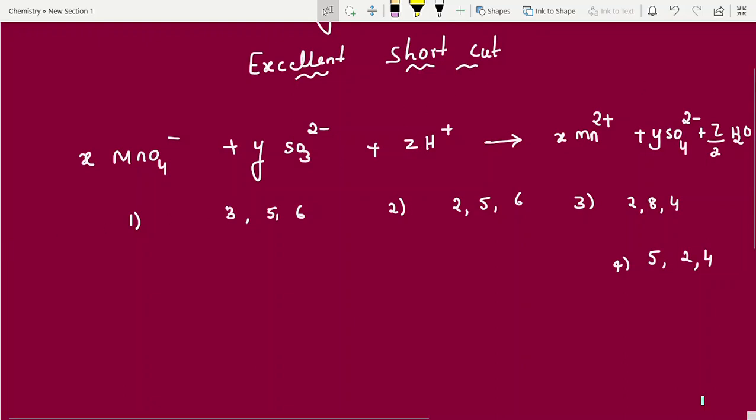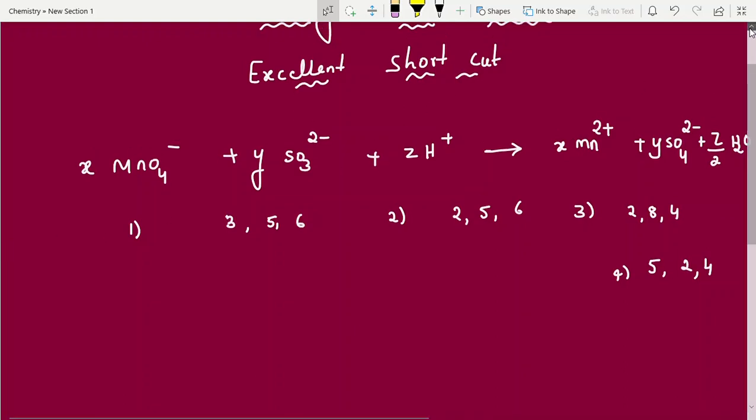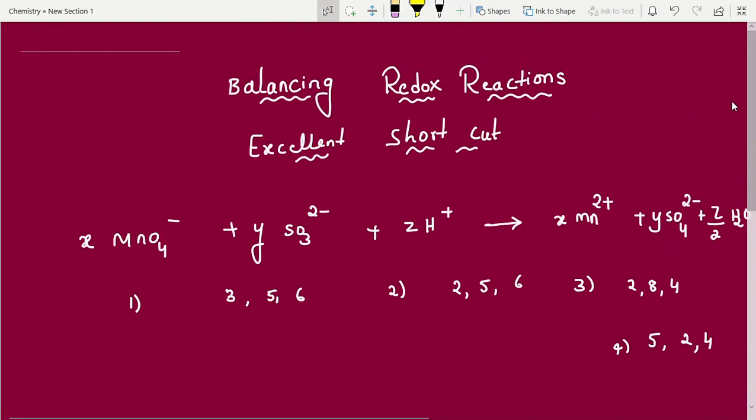We have different methods, concept explanation types. We are discussing oxidation number method, acidic medium, basic medium, ion electron method, basic medium, acidic medium, all these points we are learning.